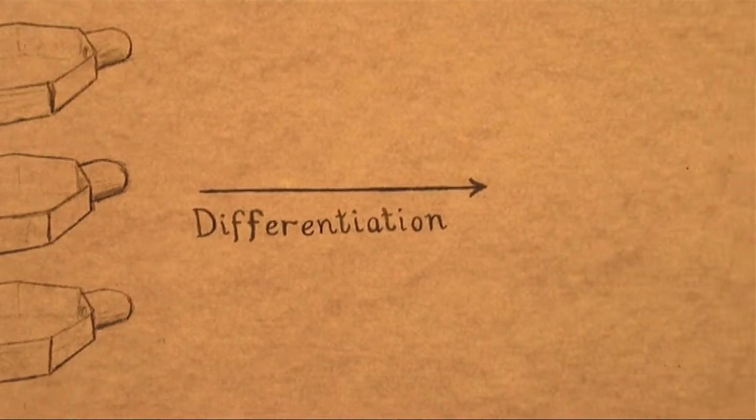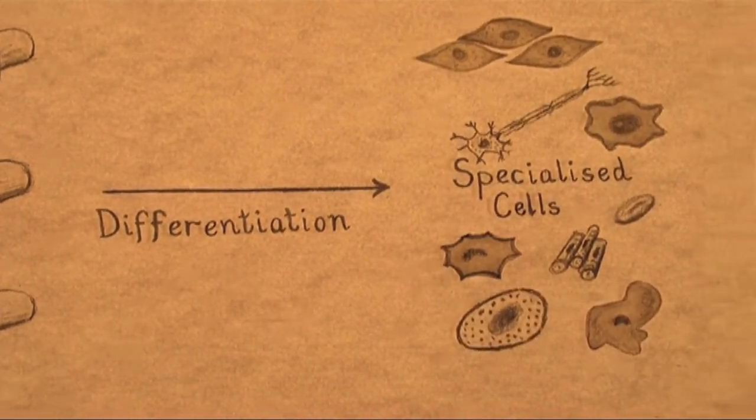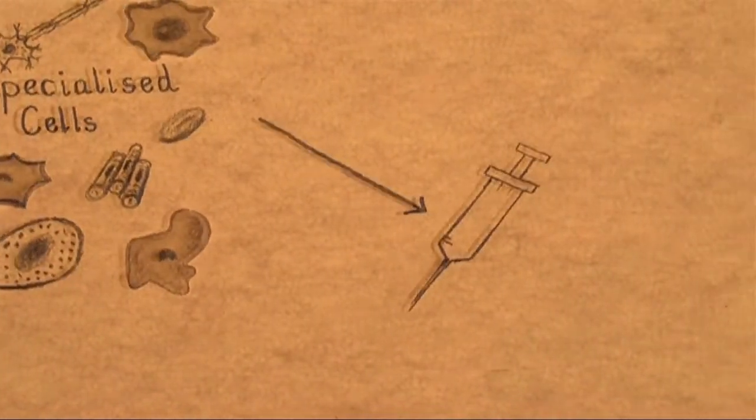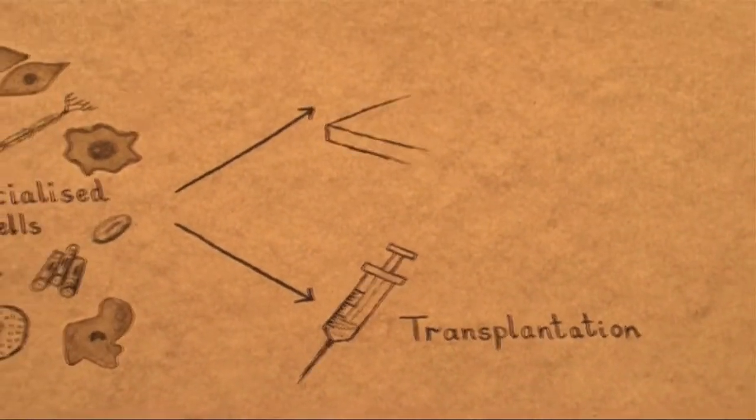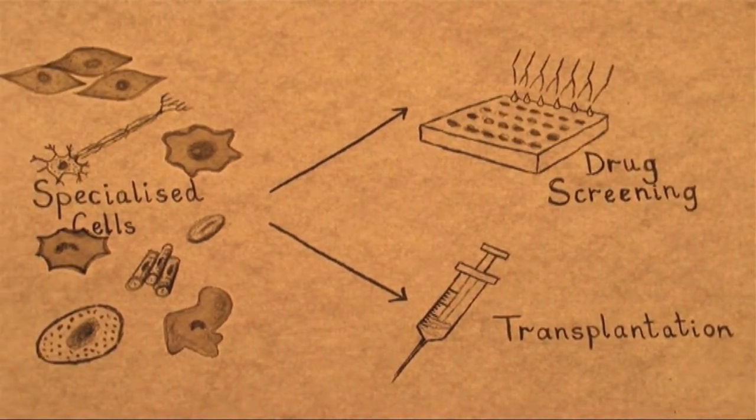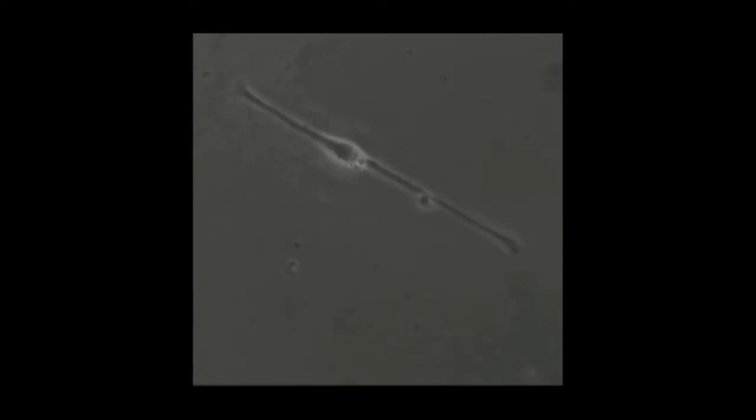Wenn man diesen Punkt einmal erreicht hat, erkennt man auch die therapeutischen Möglichkeiten, die sich daraus ergeben. In letzter Zeit haben wir uns darauf konzentriert, aus embryonalen Stammzellen Gehirnstammzellen zu erzeugen. Das hat tatsächlich funktioniert. Diese sogenannten neuralen Stammzellen können nun nicht mehr jeden Zelltyp bilden, sondern nur noch drei bestimmte Zelltypen, die im Gehirn vorkommen. Das war ein sehr wichtiger Schritt auf dem Weg zu einem wirkungsvollen Testsystem für pharmazeutische Versuche und vielleicht für Transplantation.